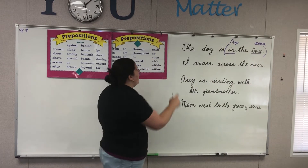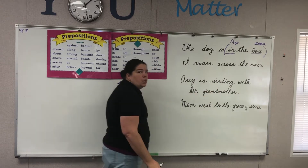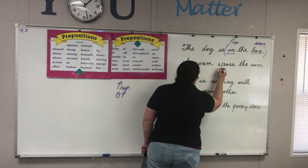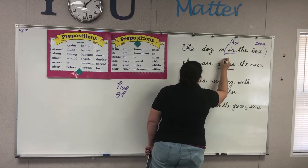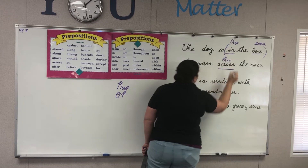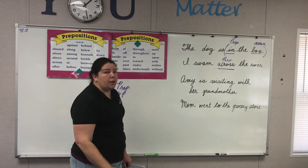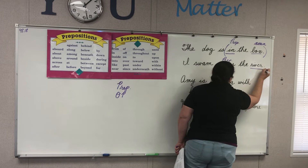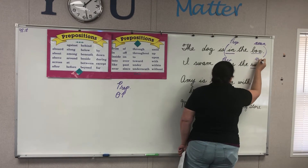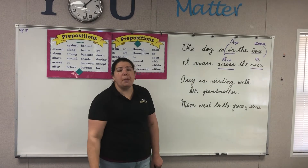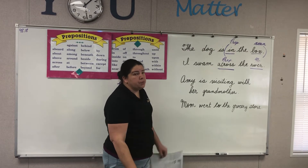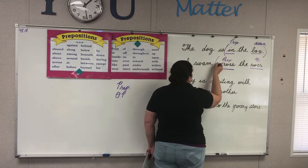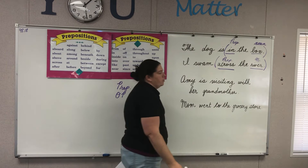Let's try it again. 'I swam across the river.' Where's your preposition? Across. Very good. So you're going to label it as preposition. Now, what is the noun or pronoun that comes after the preposition? That's river. River is your noun — we'll label that with a capital N. Where's my prepositional phrase? Remember, it's from the preposition all the way to the noun or pronoun.